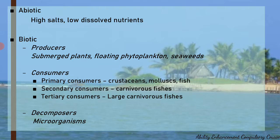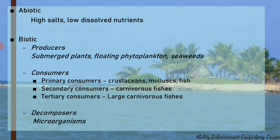Consumers in marine ecosystems include zooplanktons such as crustaceans, foraminiferans, mollusks, and barnacles as primary consumers. Secondary consumers include carnivorous fishes, seals, corals, squids, crabs, lobsters, and smaller whale varieties. Tertiary consumers are much larger animals such as killer whales, sharks, sea lions, codfish, and jellyfish.